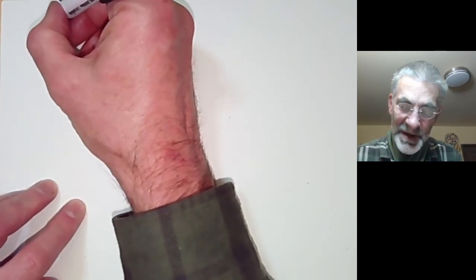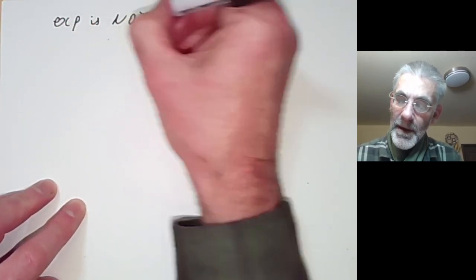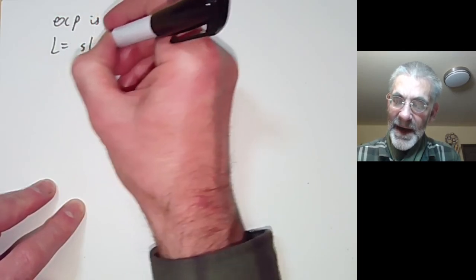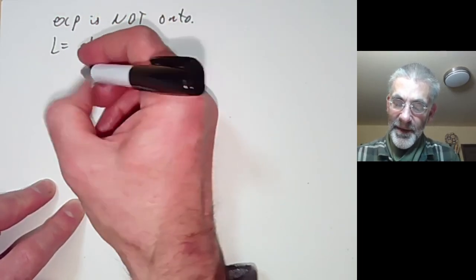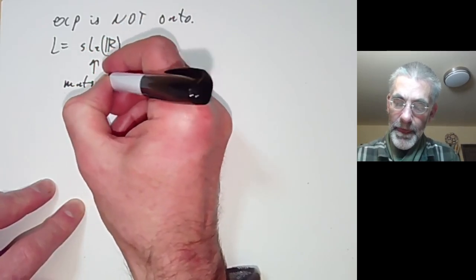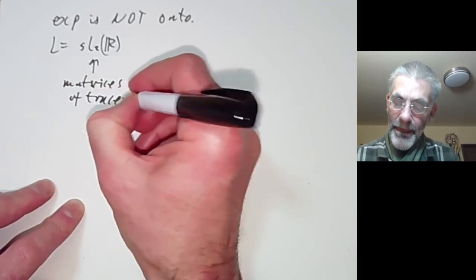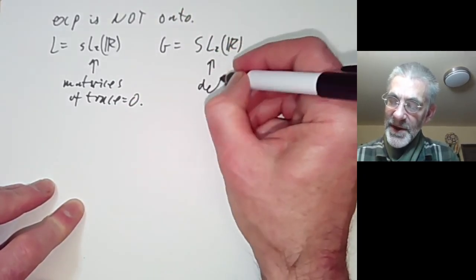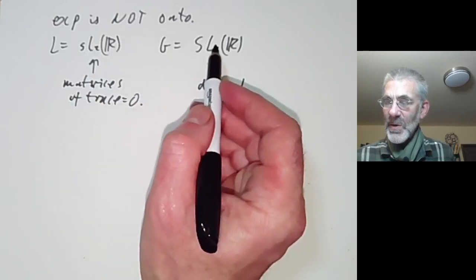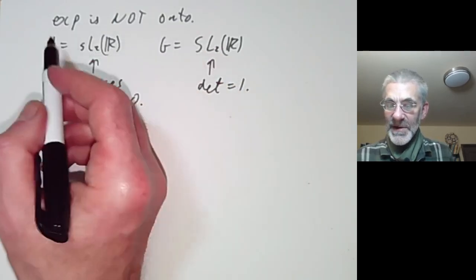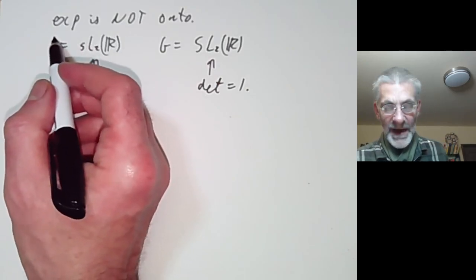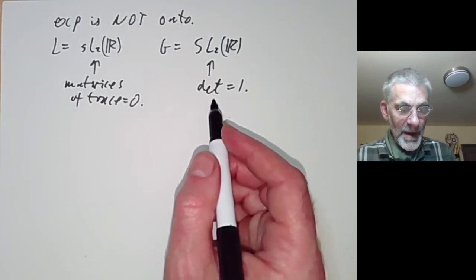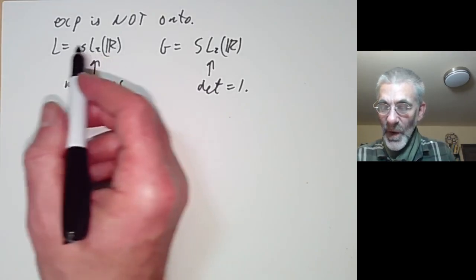Let's have an example where exp is not onto. Take the Lie algebra sl₂(ℝ) — matrices of trace zero — and the Lie group SL₂(ℝ) — matrices of determinant one. The convention is that you write a Lie group using capital letters and the Lie algebra using small letters, though I prefer using a capital L for the Lie algebra since lowercase g is used for other things. Let's think about what the image of exp must be.